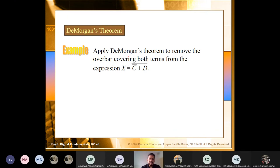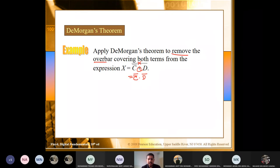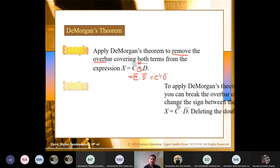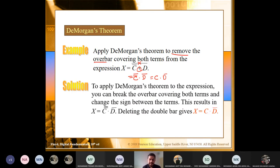You can apply De Morgan's theorem by removing the over-bar — you break the bar and change the operation. So for example, (C bar + D) bar should be equal to C bar bar · D bar. C bar bar is basically C, so the result is C · D bar. That is how to simplify that expression.